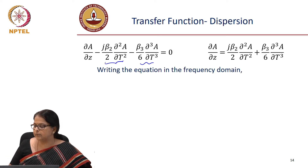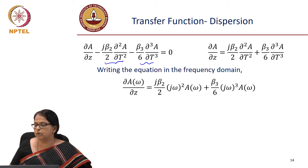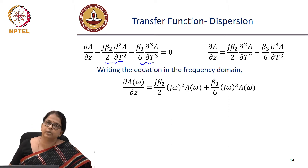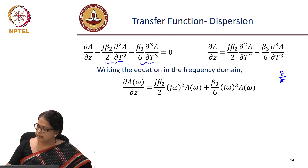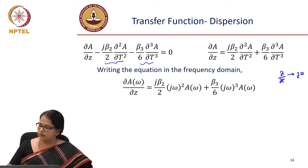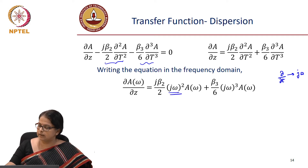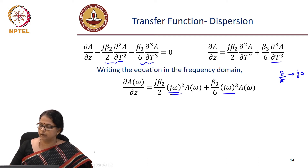We can write this in the frequency domain. We know how to convert from time domain to frequency domain. Del by del t has to get replaced by j omega. So del by del t squared should get replaced by j omega squared, and del by del t cubed should get replaced by j omega cubed.